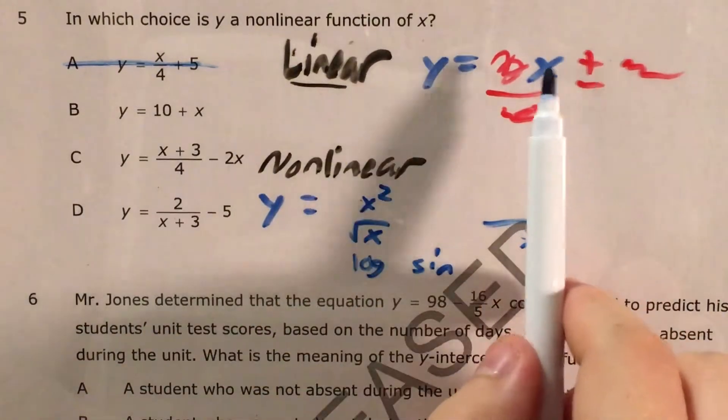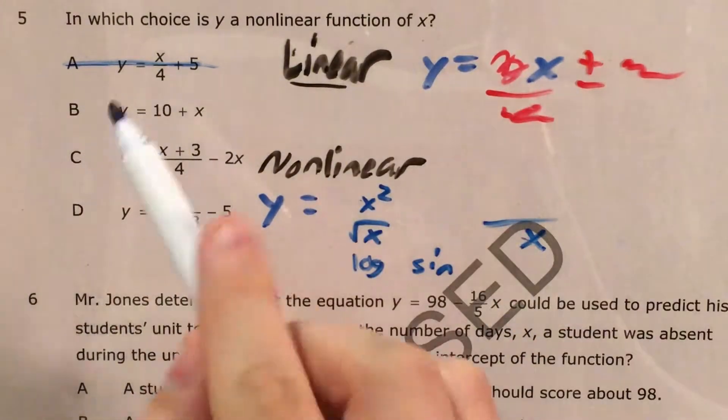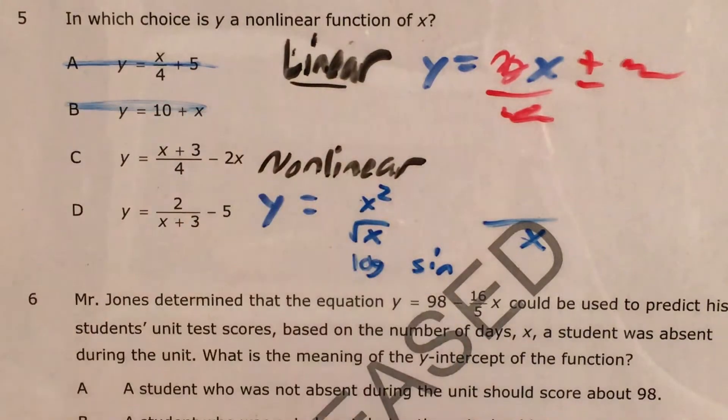y equals 10 plus x. Now x plus something or a number plus x is fine. So we know we're linear, so we know B is not our answer.